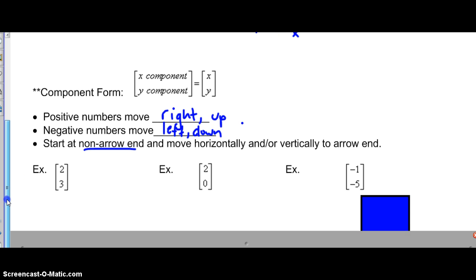Here's a few examples. The vector [2, 3], the X component is 2 and the Y component is 3. If we were going to draw that out, we'd start at our non-arrow end, we would move two units to the right because it's moving in the positive direction, and then three units up for the Y component. Our vector would start here and our arrow would end at the end.